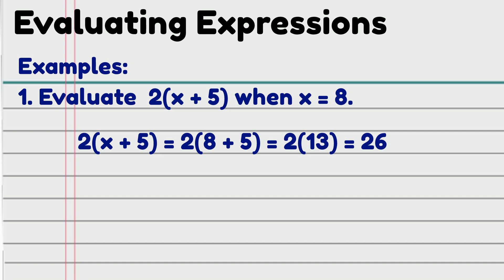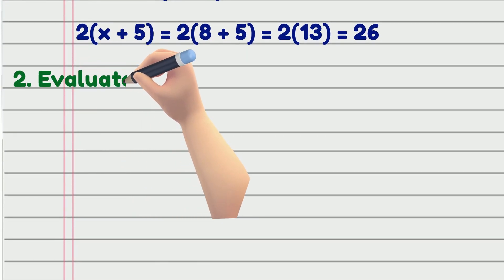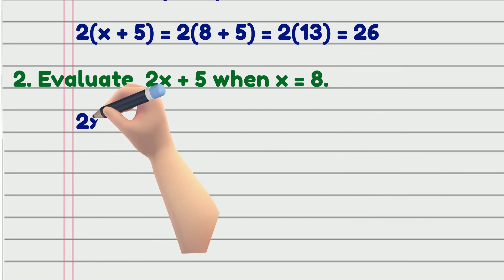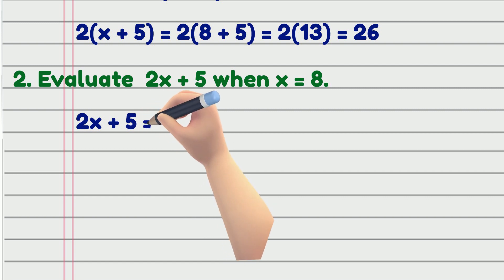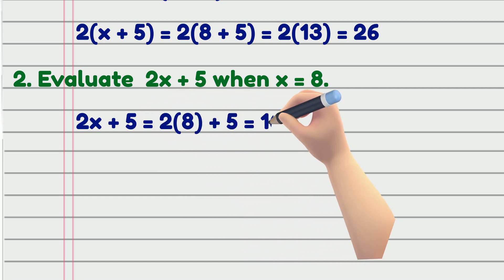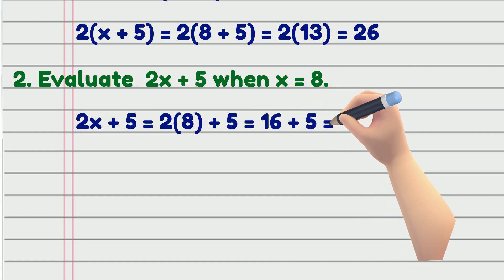Now, let's say for example 2, we evaluate the same set of numbers and operations when x is also 8, but this time, without the parentheses. 2x plus 5. Plugging in the value of x, we get 2 times 8 plus 5. It then becomes 16 plus 5, which is equal to 21.